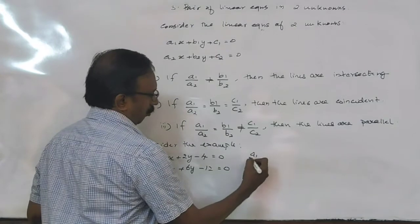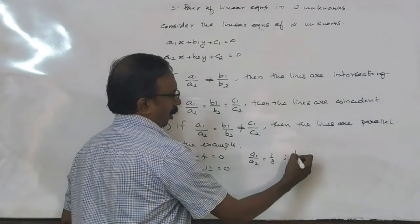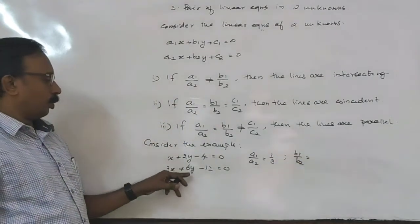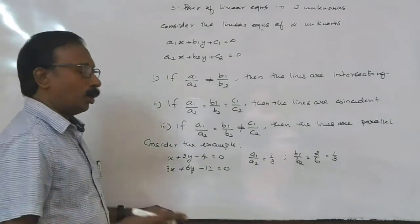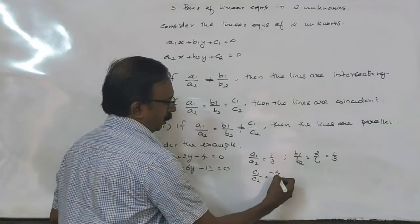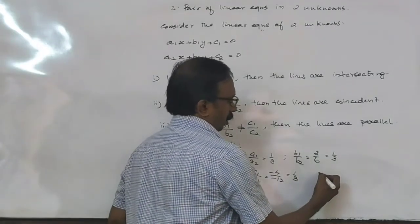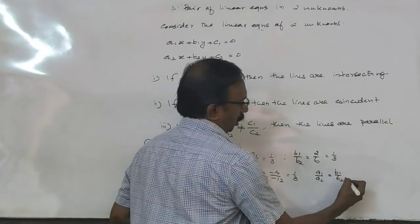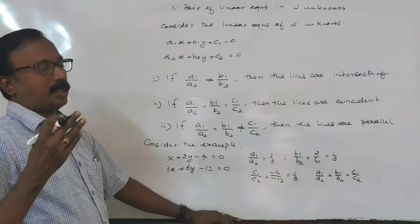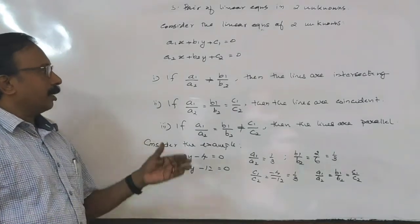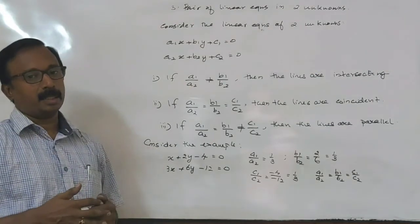In another example, a1 by a2 is equal to 1 by 3, and b1 by b2 is equal to 2 by 6, that is 1 by 3. Since a1 by a2 is equal to b1 by b2 is equal to c1 by c2, therefore the lines are coincident lines. This way we can find whether different lines are intersecting, parallel, or coincident.